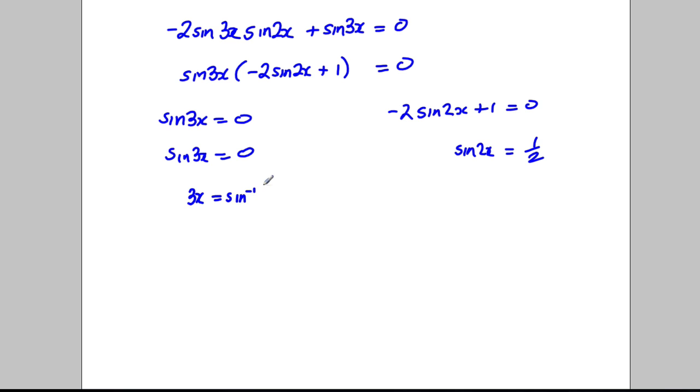So 3x is the inverse sine of 0, so 3x gives me 0 if I do that in the calculator. And 2x is the inverse sine of a half, so 2x is going to equal 30.